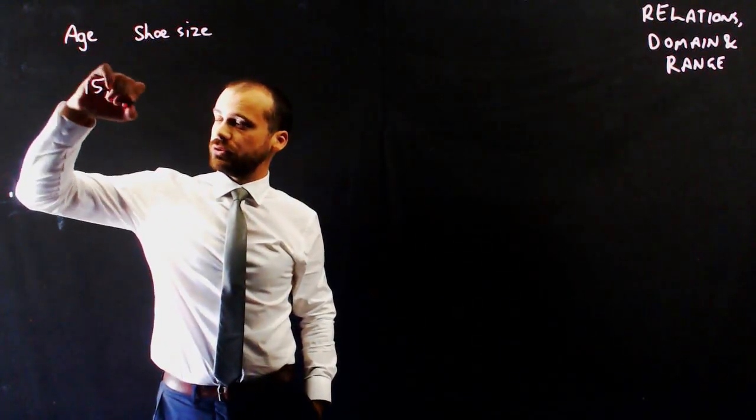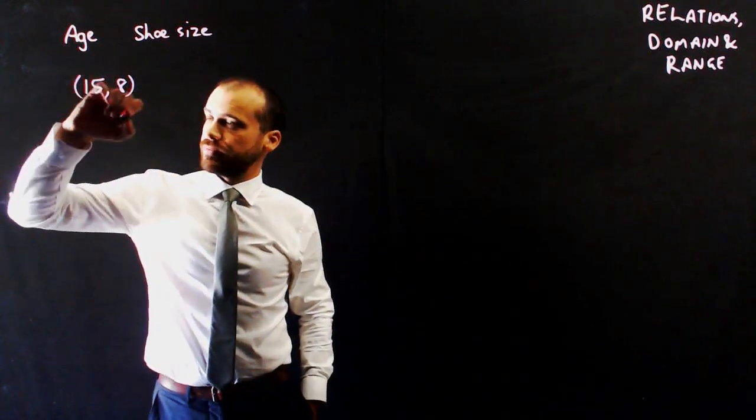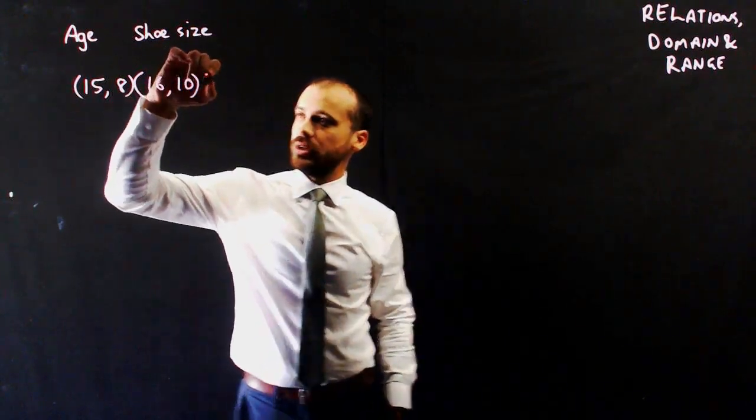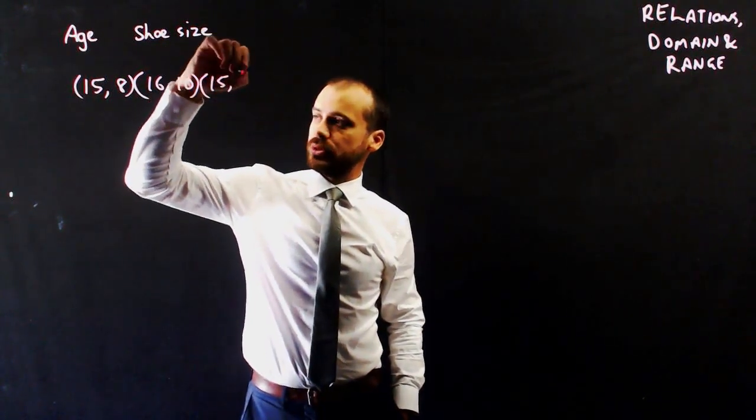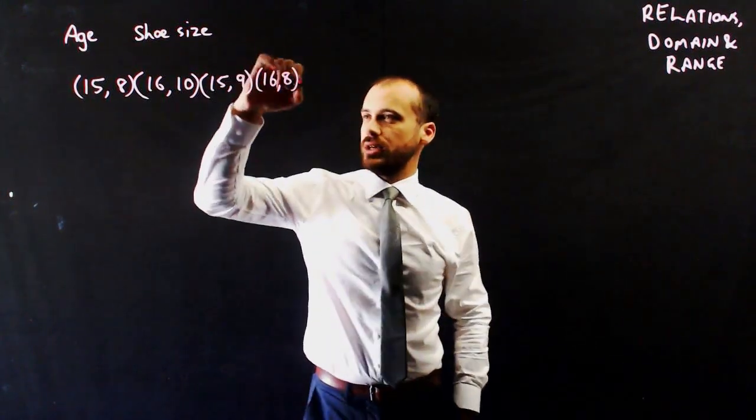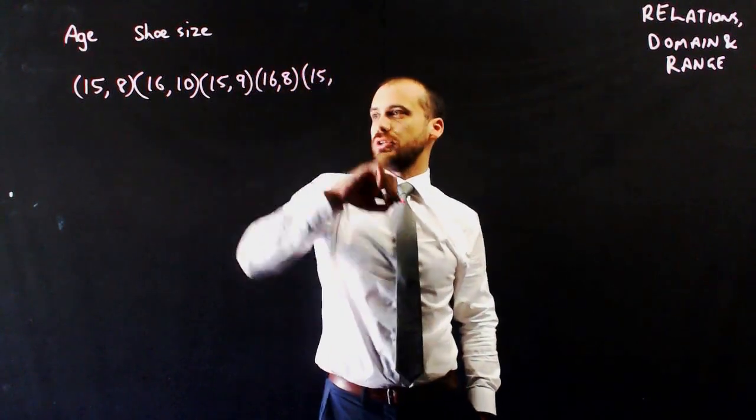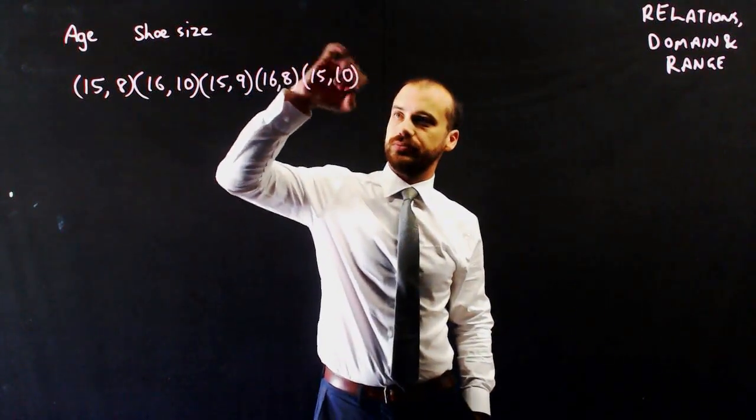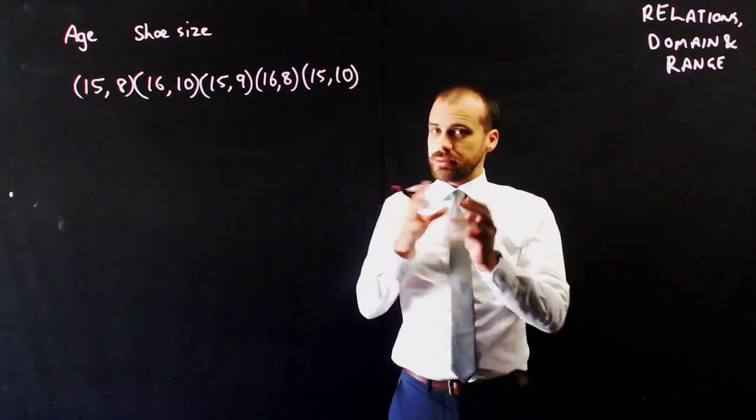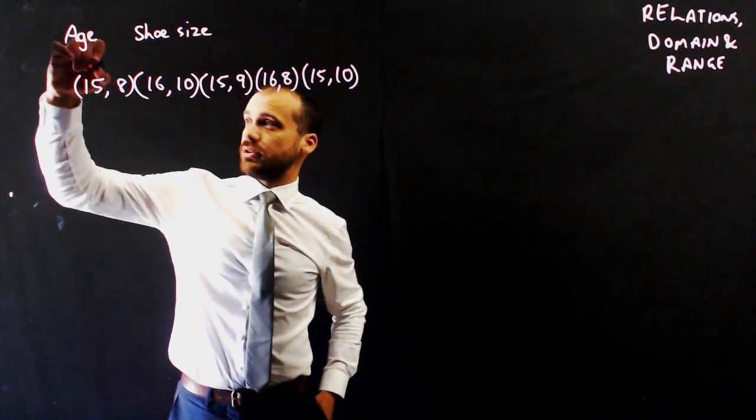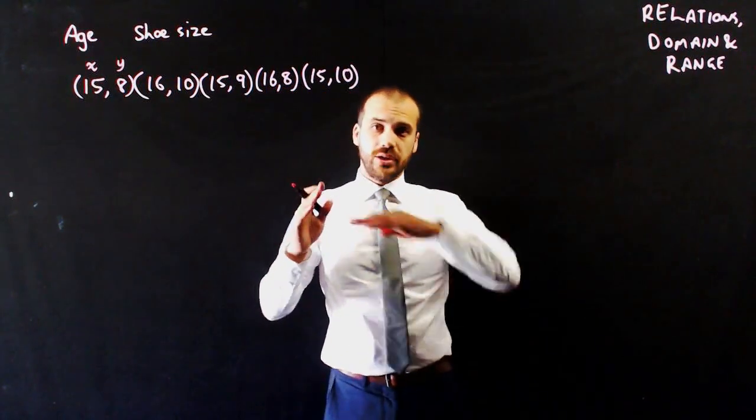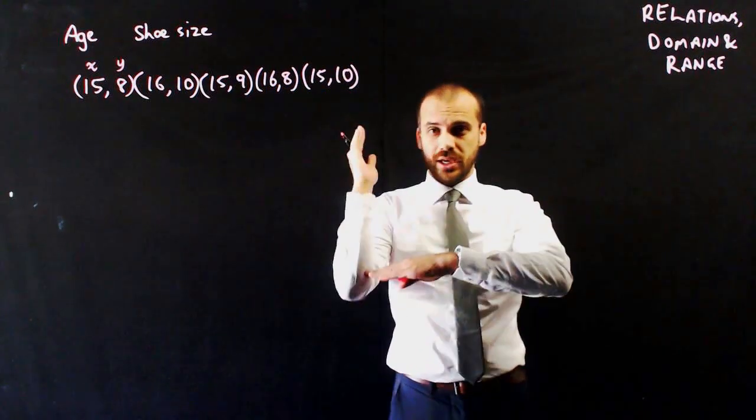So the five people have the following age slash shoe size. I have a 15-year-old with a size 8 shoe, a 16-year-old with a size 10 shoe, a 15-year-old with a size 9 shoe, a 16-year-old with a size 8 shoe, and a 15-year-old with a size 10 shoe. So they can be put on a graph with our first coordinate being x and our second coordinate being y, and we'd have age and shoe size.